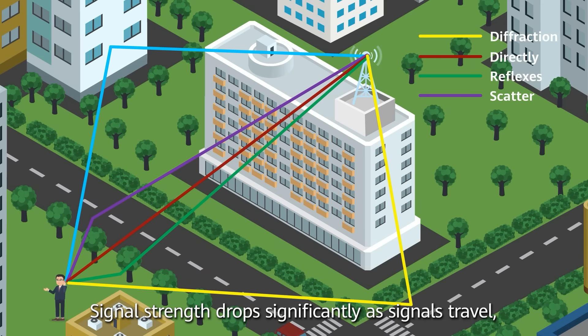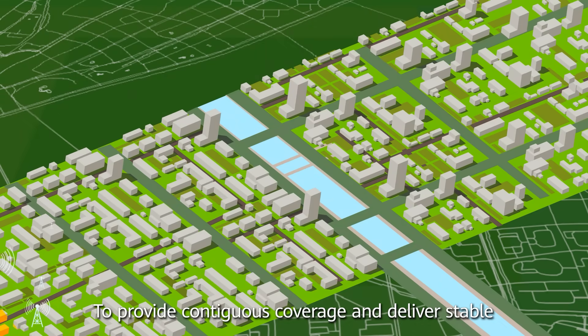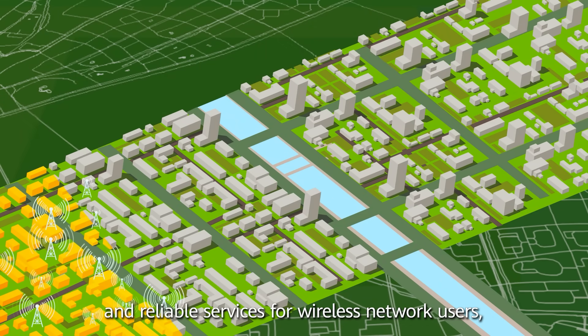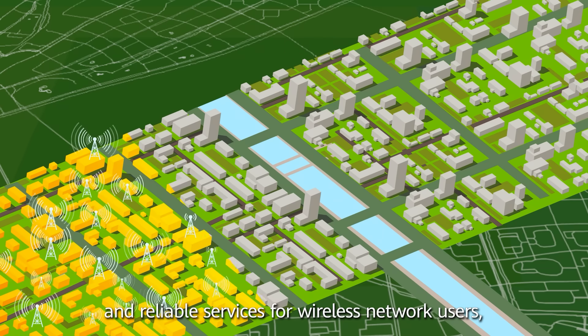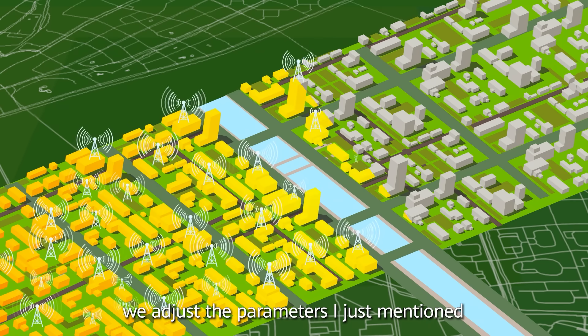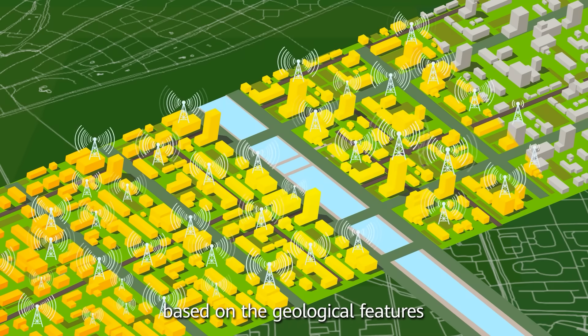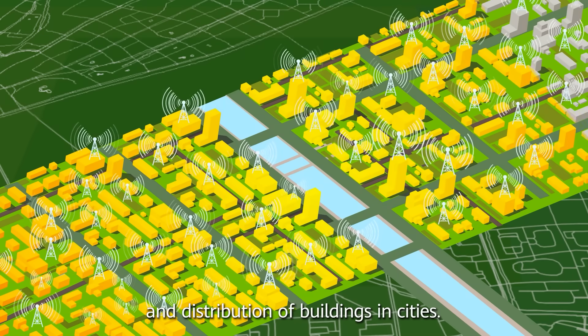Signal strength drops significantly as signals travel, but some strength still remains when they reach the user. To provide contiguous coverage and deliver stable and reliable services for wireless network users, after deploying light sources, we adjust the parameters I just mentioned based on the geological features and the distribution of buildings in cities.